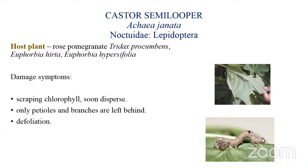The next pest is the castor semilooper. The scientific name is Achaea janata, belonging to family Noctuidae and order Lepidoptera. This pest is also known to attack rose, pomegranate, Tridhax procumbens, Euphorbia hirta, and Euphorbia hypericifolia. The freshly hatched larvae feed gregariously.